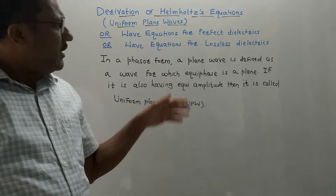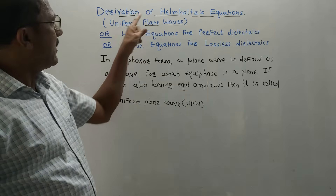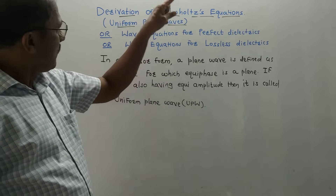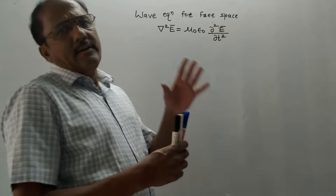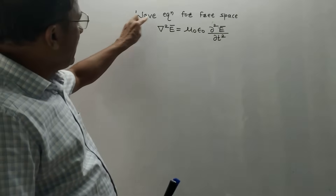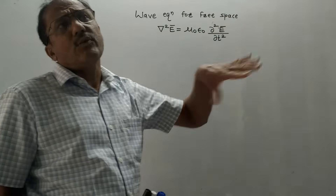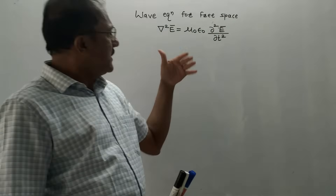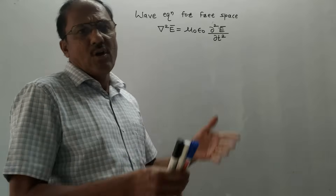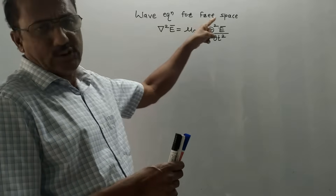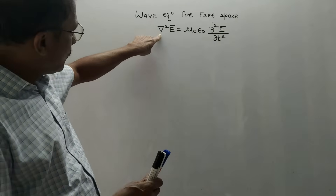Next we will derive the equation for Helmholtz's form in the case of uniform plane waves. The derivation starts with the wave equation for free space. We have already discussed these wave equations for free space. If you haven't yet watched the video on derivation of wave equations for free space, do watch it — I will provide the link in the description box.